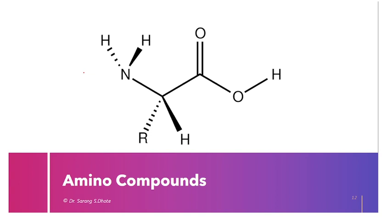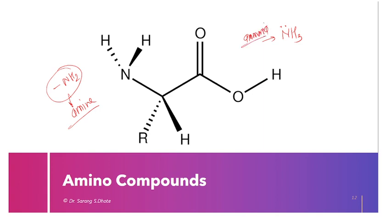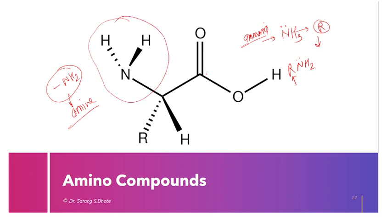The basic structure of amino compounds contains the NH2 group, which is the amine group as a functional group. Due to the presence of this amine group, they are called amino compounds — that is, hydrocarbon derivatives of ammonia. The formula of ammonia is NH3. If one hydrogen is replaced by an alkyl group, the structure becomes RNH2, which is the alkyl amine. Similarly, the second and third hydrogens can also be replaced, giving various derivatives of ammonia.